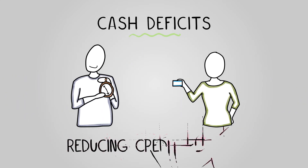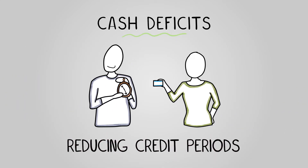Reducing the time customers have to pay their bills can also make a difference. Some businesses let their customers pay later, but waiting a long time for payment can be hard on cash. If a business shortens the wait time from 30 days to maybe 14 or 7 days, that could help — especially if some customers always pay late.